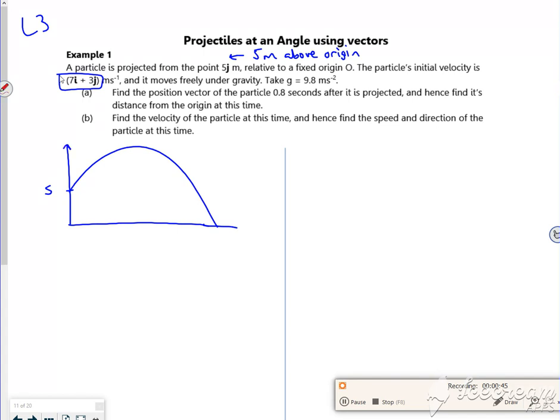Its velocity vector is 7 across and 3 up. So remember I like to draw the velocity vector separate as well. So 7 across and 3 up there.